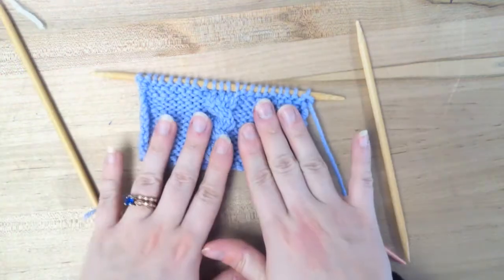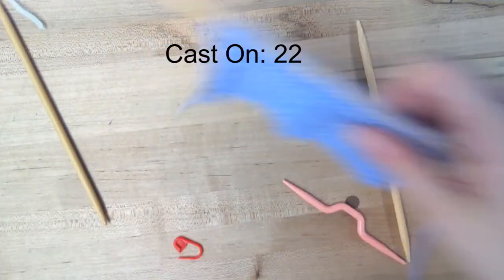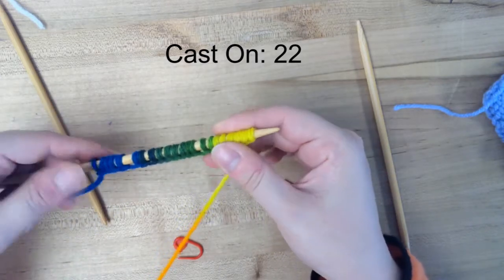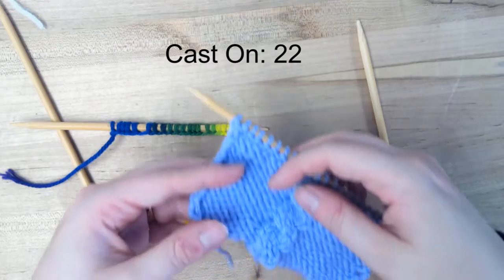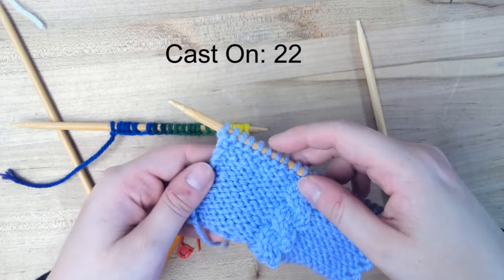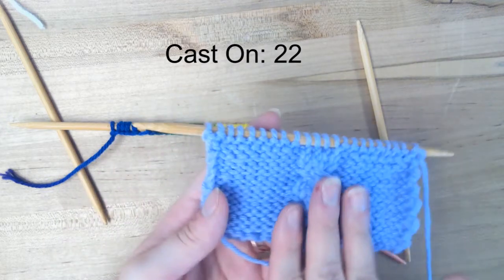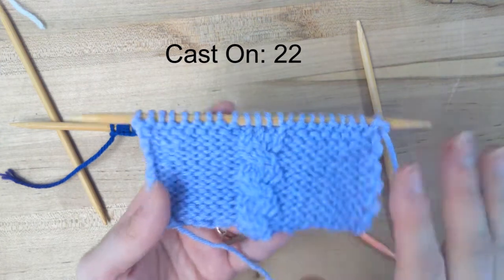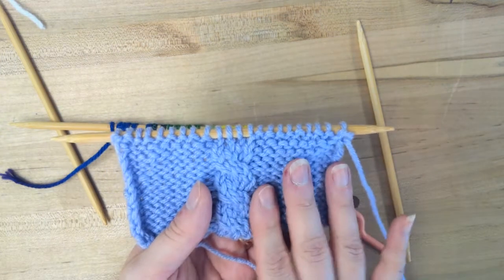Now to get this one started, we're going to cast on 22 stitches. That's going to give us nine that we're going to do in stockinette, and then four that are going to be done with the cable, and then another nine also in stockinette.